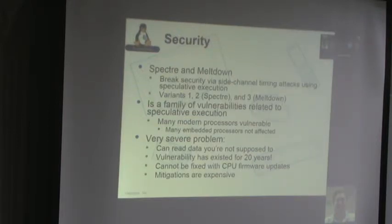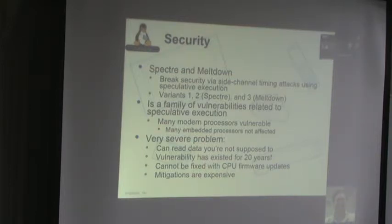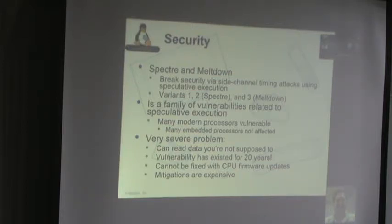The big news in security: Spectre and Meltdown. These are a large class of bugs with one thing in common — they break system security via side-channel timing attacks using speculative execution. People often refer to three variants: variant 1 and variant 2 are forms of Spectre, and variant 3 is a form of Meltdown. The entire thing is a family of vulnerabilities related to speculative execution in modern processors.